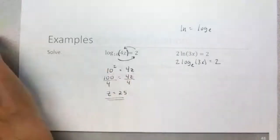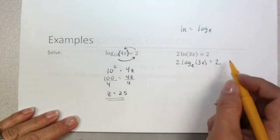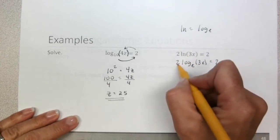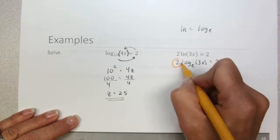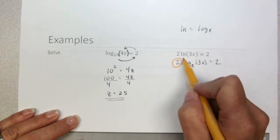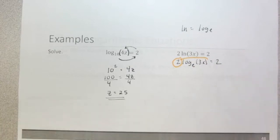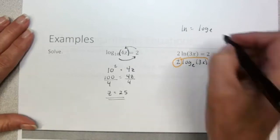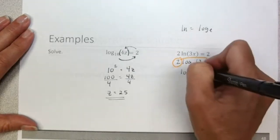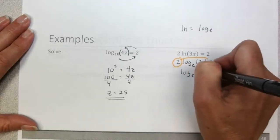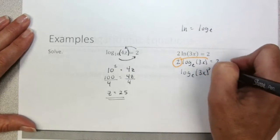We have a problem here. We cannot convert this logarithmic expression to an exponential expression while it has a coefficient. We need to use the power rule — we need to bring up that exponent first. So this then becomes the log base e of (3x) squared equals 2.